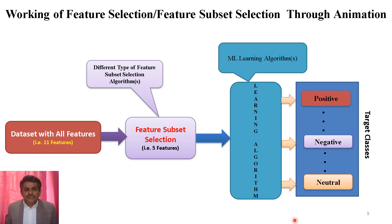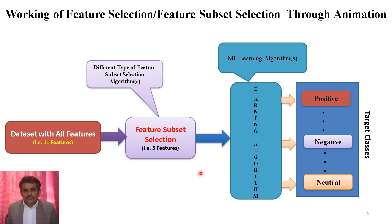This scenario is about a classification problem. I have considered 3 classes in the experiment: positive, negative, and neutral. So based on the selected features, the performance of the algorithm may be evaluated.